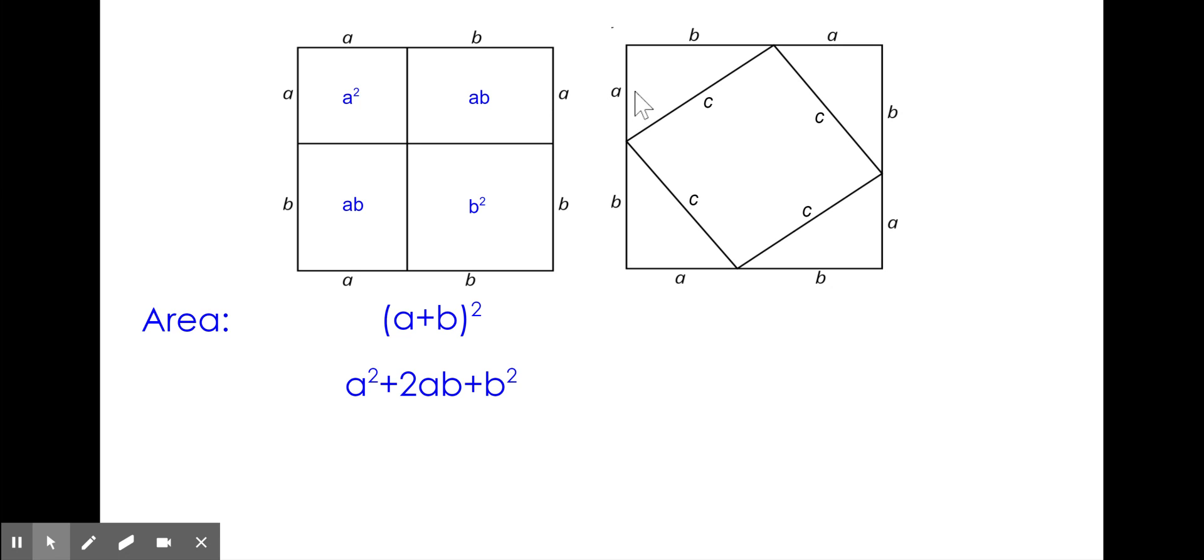On the right, we have four right triangles, and we have an inscribed square of side length C. The area of a triangle is one-half base times height, so we have an area of one-half A times B, and we have four of these triangles. The area of the square in the center is C squared. We can write the area as 4 times one-half times A times B plus C squared.